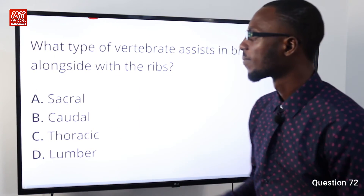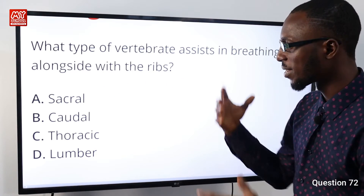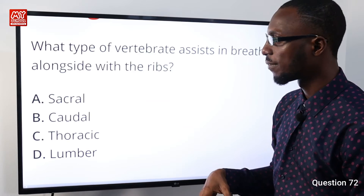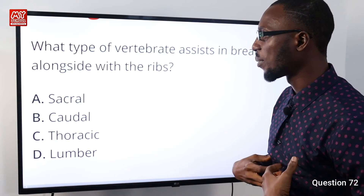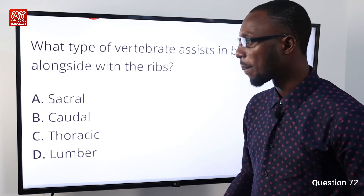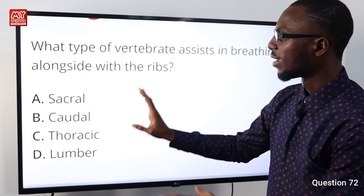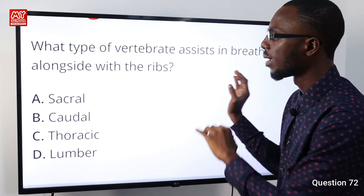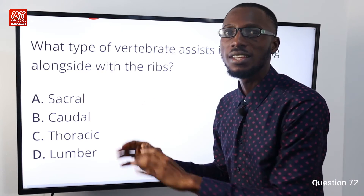Question 72: What type of vertebrae assist in breathing alongside the ribs? We have the cervical (around the neck), thoracic (upper torso), lumbar (lower torso), pelvic (belt region), and sacral (tail region). The type of vertebrae that assist in breathing alongside the ribs are the thoracic vertebrae. This makes option C correct.